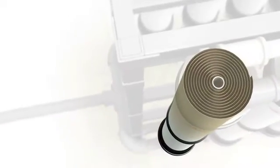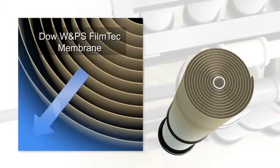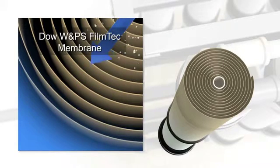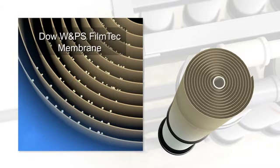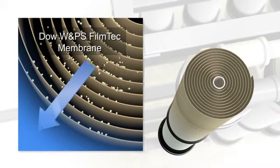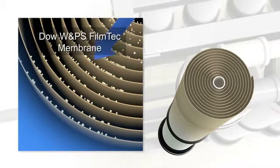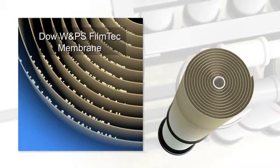Inside the reverse osmosis vessels, the source water is fed through a Dow Water and Process Solutions spiral membrane. This specialized membrane acts like a filter that prevents most salt ions from passing through, allowing the separation of the desalinated water from the source water.